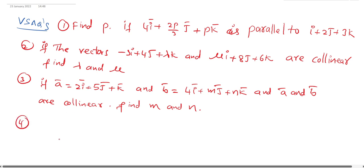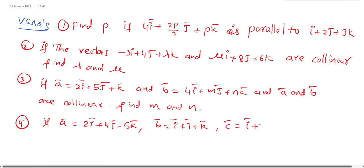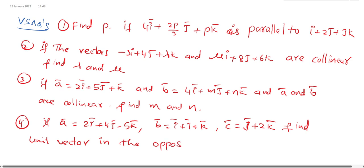Fourth question: If ā = 2ī + 4j̄ − 5k̄, b̄ = ī + j̄ + k̄, and c̄ = ī + j̄ + 2k̄, find the unit vector in the opposite direction of ā + b̄ + c̄.